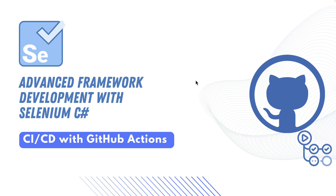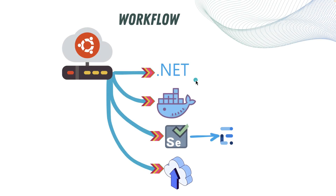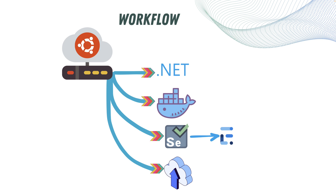The idea of executing the whole test within the CICD pipeline of GitHub Actions is going to look something like this. This is the workflow we are going to be talking about. We are basically going to use the GitHub Actions workflow to spin up our application under test and our test execution within the GitHub Actions machine, which is an Ubuntu machine.